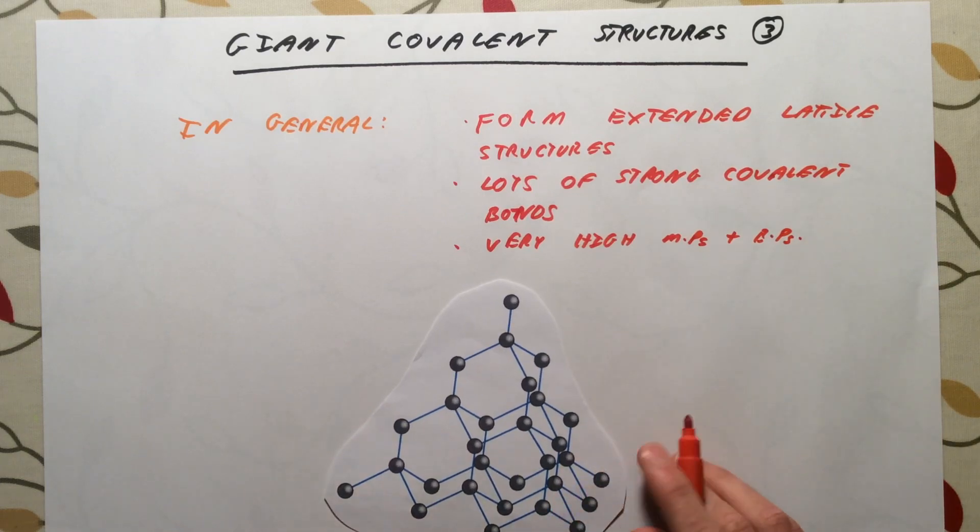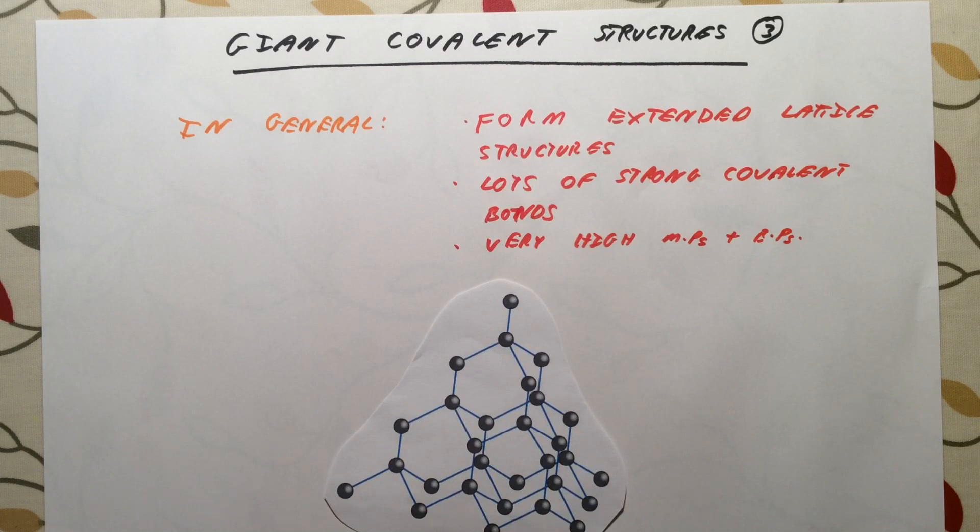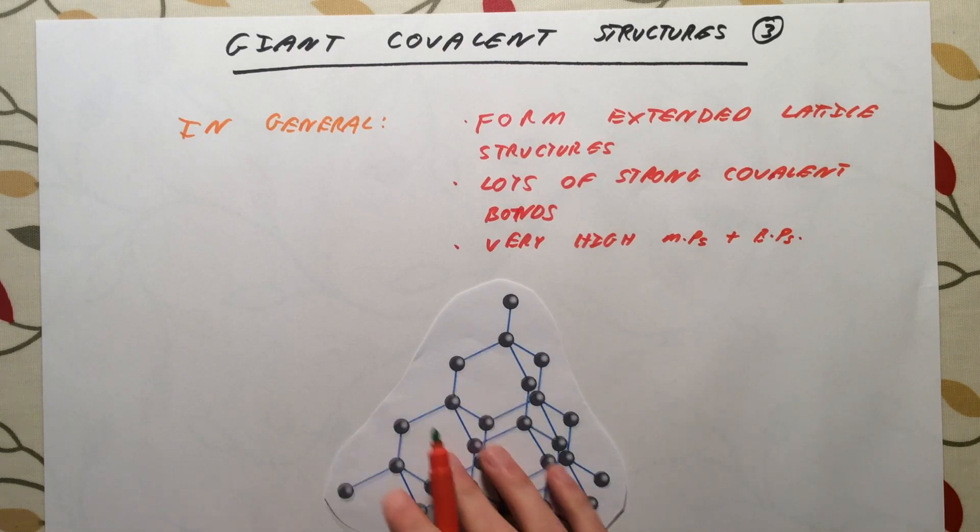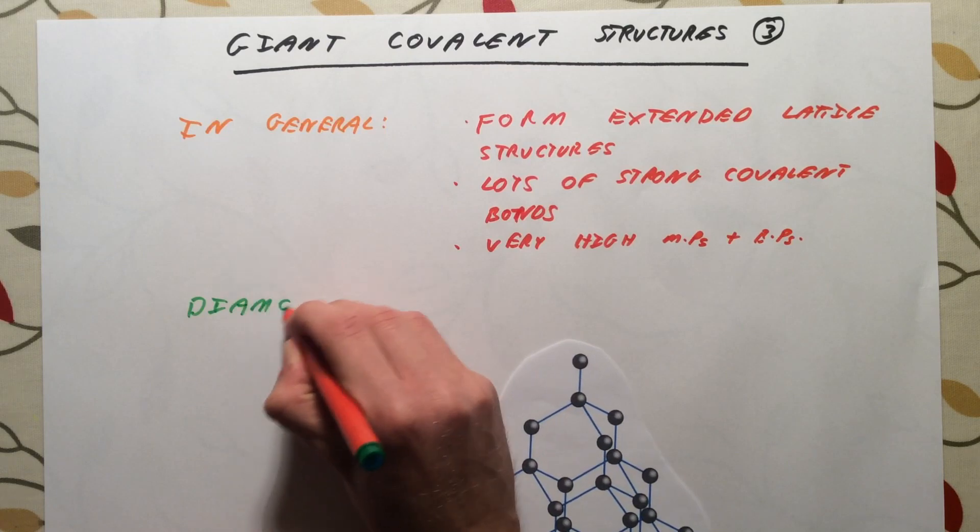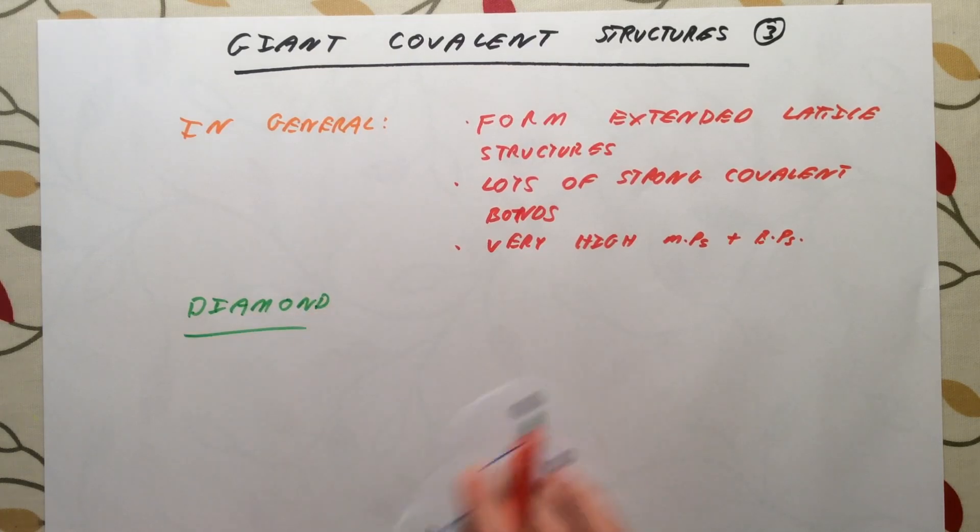As far as foundation tier goes, that is all you need to know. However, for higher tier, we need to go into a bit more detail and look at two examples in particular of these structures, give uses of them, and explain why they have the properties they have. The two examples we need to know are diamond and graphite.